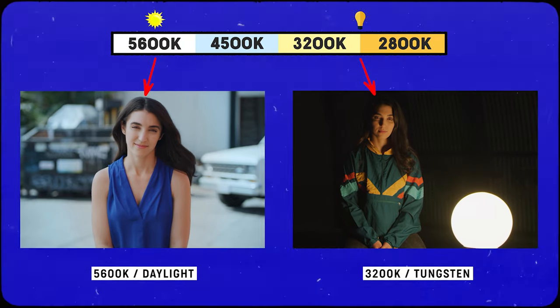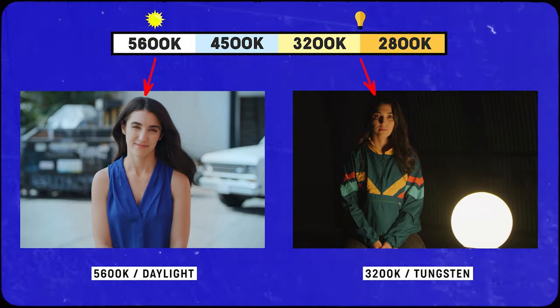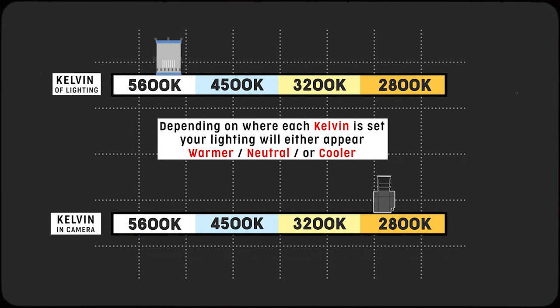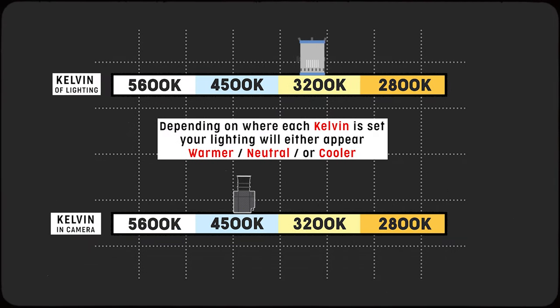There's the color temperature of your lights, but there's also another color temperature that some people forget about: the color temperature of your camera. This relationship between the color temp your camera is set at and the actual Kelvin your lights are at in the frame is going to play a very big part.